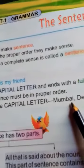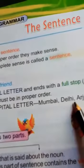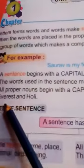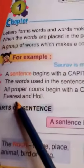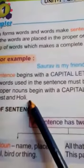Examples of proper nouns: Mumbai, Delhi, Arjun, Everest, and Huli.